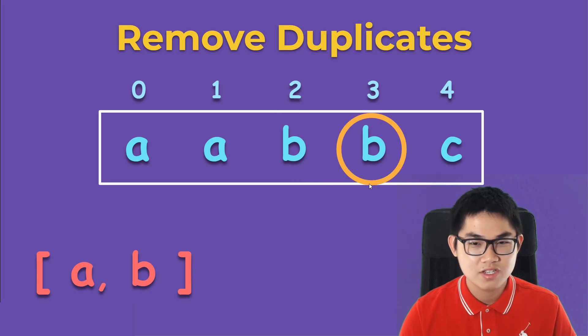And then we move on to the next element. We look at the left. Is it the same letter? Yes, it is. So we don't do anything here, we just move on to the next one. And we look at the left again. Is it the same letter? No, it is not. So we add C into the list.